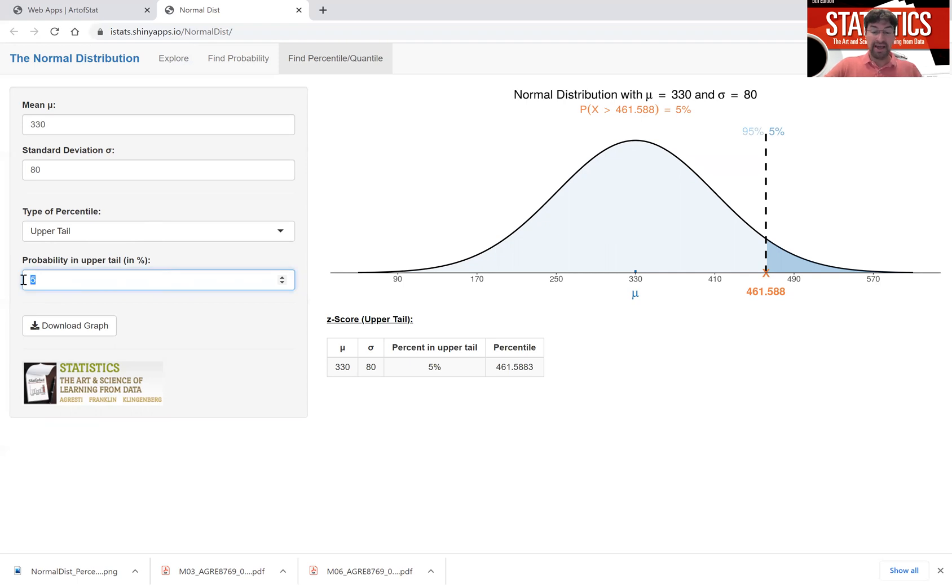If you were curious what the 80th percentile is, that means 20% in the upper tail. Well, the 80th percentile is 397.3. 80% of observations are below it, 20% are above it.